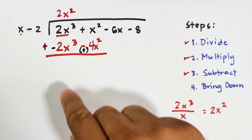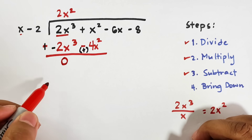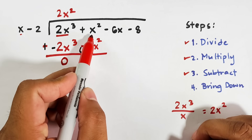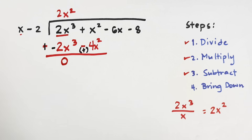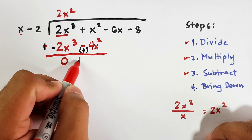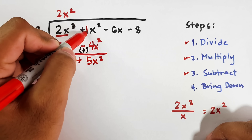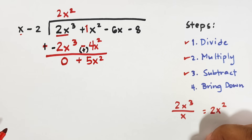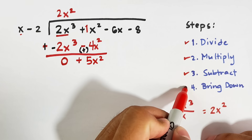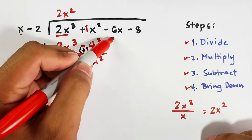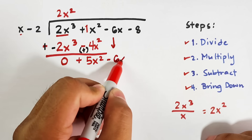Now let's add: 2x cubed plus negative 2x cubed equals 0. Then x squared plus positive 4x squared gives us 5x squared, since the original coefficient is 1. After subtracting, we do the bring down — we bring down negative 6x.